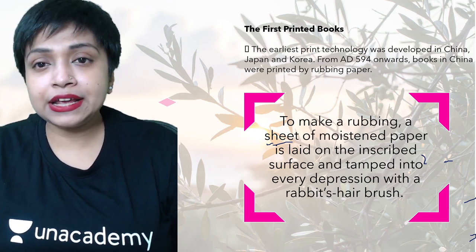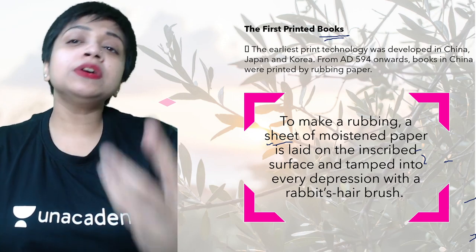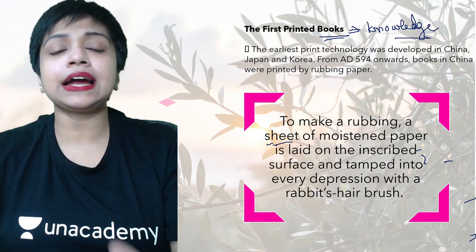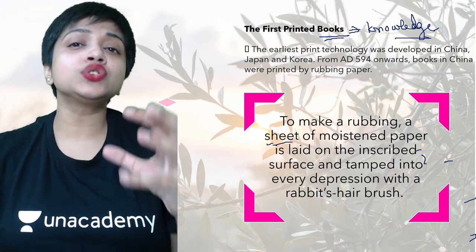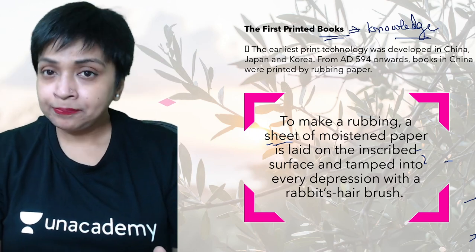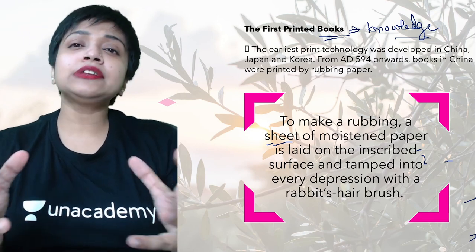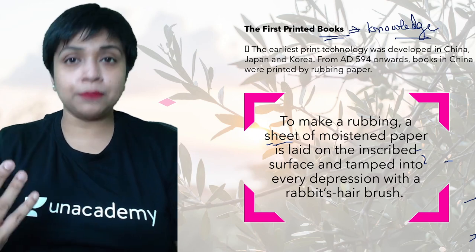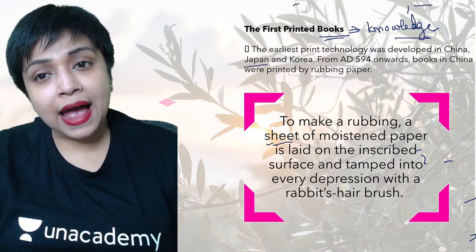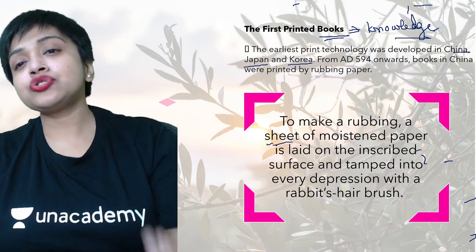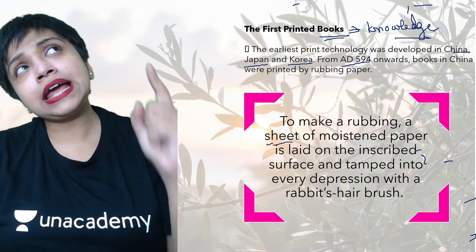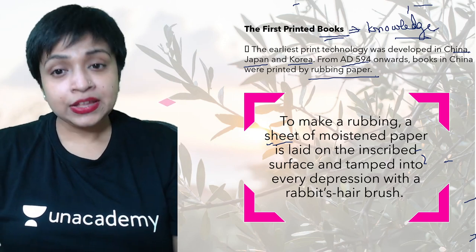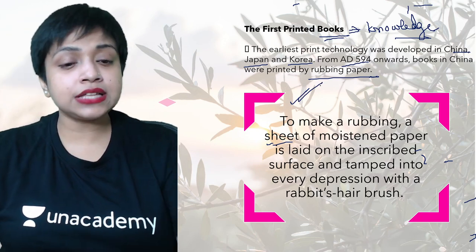Books are very important — they give you knowledge, whether textbooks or story books. They give exposure to the outside world. The first books were not printed; they were written by hand. The first printing technology came in Europe, Japan, Korea, and China. From around 594 AD, using rubbing paper technology, China started printing.